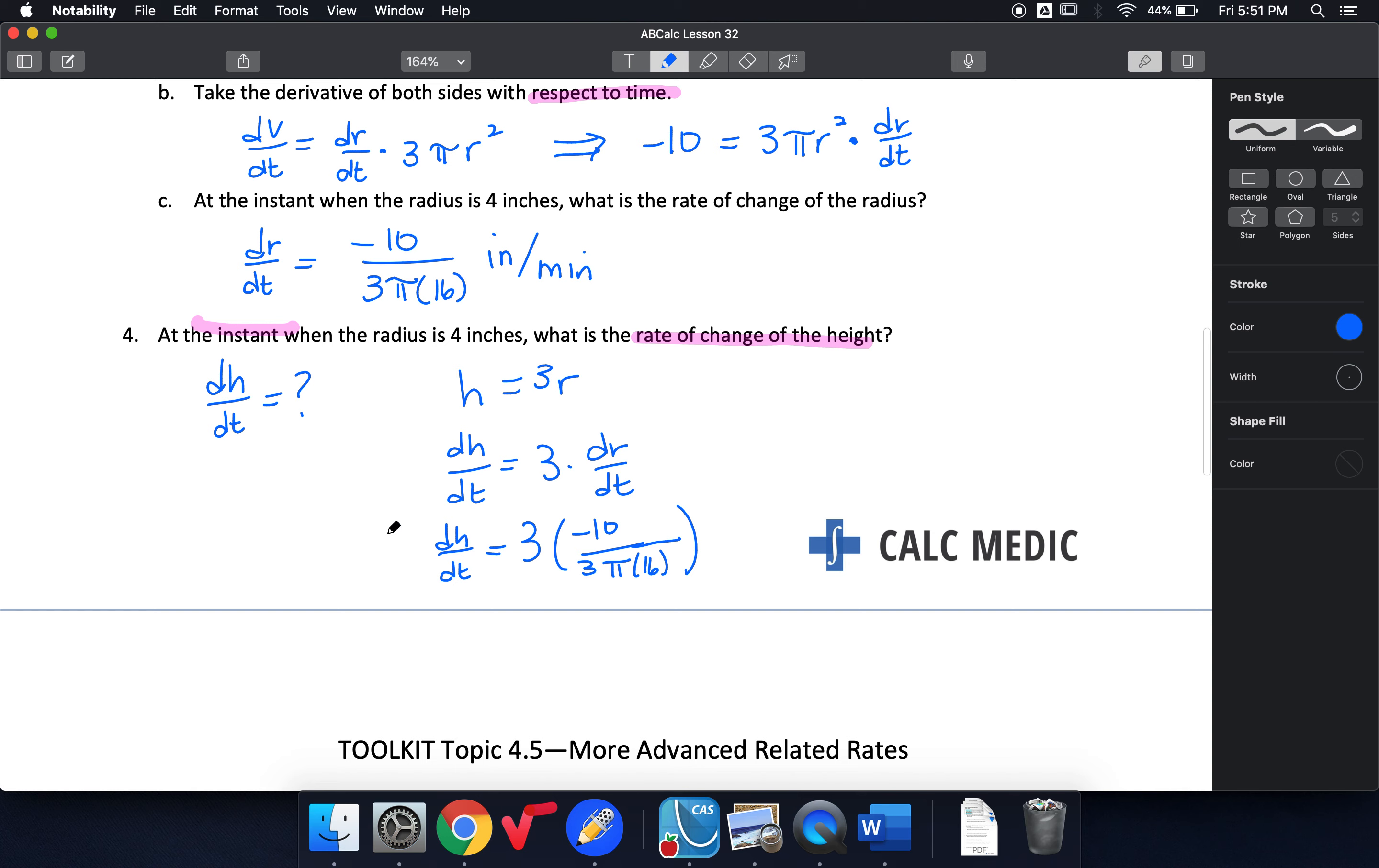dh/dt needs units. My height is measured in inches. My time is measured in minutes. So that's another related rates problem. And again, we'll talk about this more in class, especially with what to toolkit for that. I'll see you there.